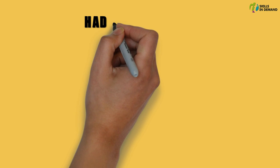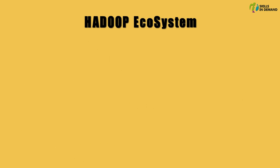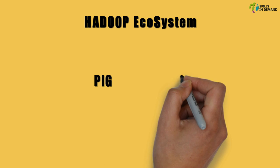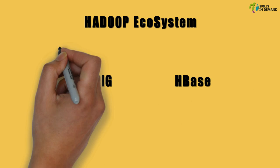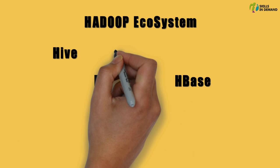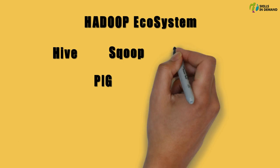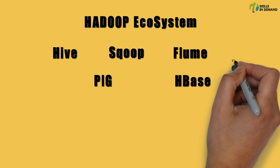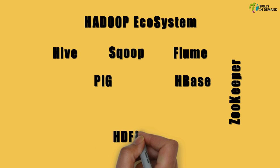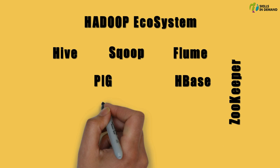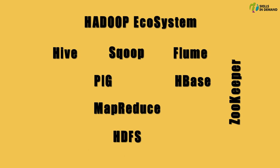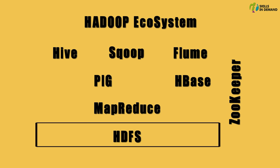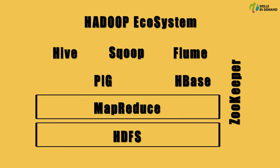The Hadoop ecosystem comprises Apache Pig, Apache HBase, Apache Hive, Apache Sqoop, Apache Flume, and Apache Zookeeper, along with the Hadoop Distributed File System and MapReduce. We all know the functionality provided by HDFS and the MapReduce framework. Now let us try to explore the functionality offered by the rest of these softwares.